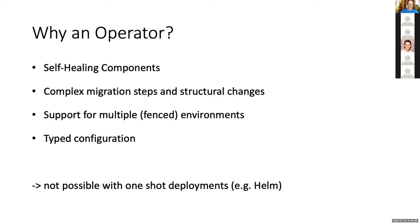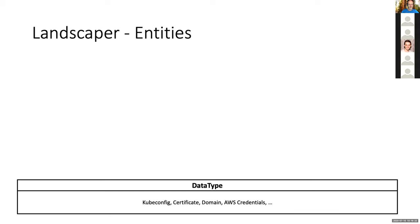At the base of our Landscaper, we have a so-called data type. Data types are the foundation of all other components — they define the data using an OpenAPI 3 spec, where you can define things like a kubeconfig, a certificate, a domain, AWS credentials, in an OpenAPI 3 spec manner. This is one part of having a clear structure and well-defined components.